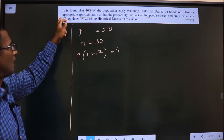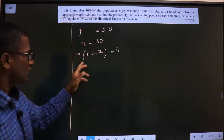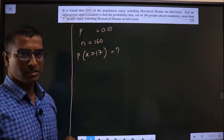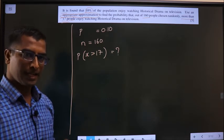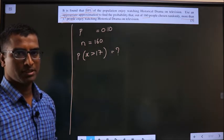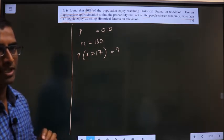And also appropriate approximation. So here more than 17 means binomial distribution I cannot apply. I have to use normal distribution. So in any normal distribution question we have to make use of this one.